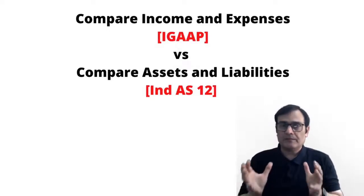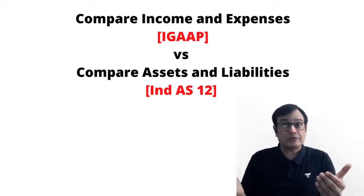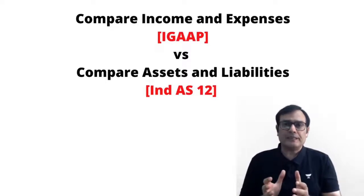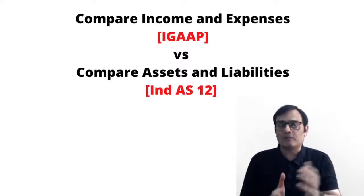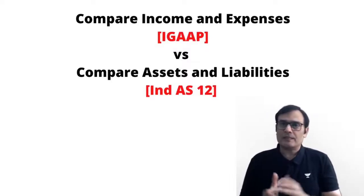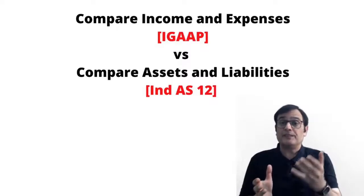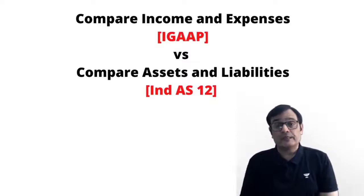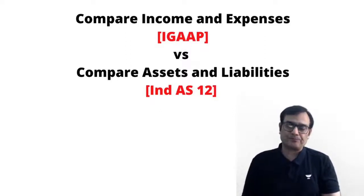The balance sheet approach is a much wider approach. There are a couple of differences which would be classified as no difference under the income statement approach but would be treated as a difference under the balance sheet approach. For example, if you revalue an asset, the revaluation increase is not taken in the income statement under IGAAP, so there is no consequential impact on the income statement from an accounting or taxation point of view — resulting in no difference and no deferred tax asset or liability. But under the balance sheet approach, revaluing the asset increases its carrying value in the balance sheet, while for taxation purposes revaluation is ignored, creating a difference between the carrying value and the tax base of the asset with consequential deferred tax implications.